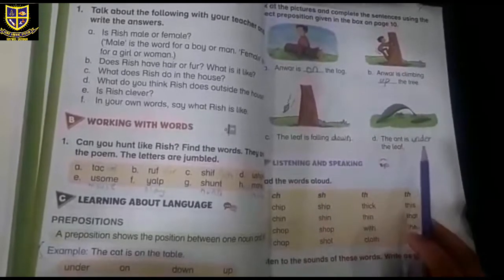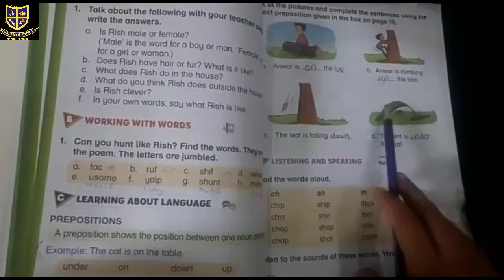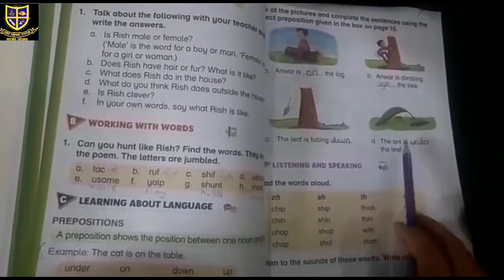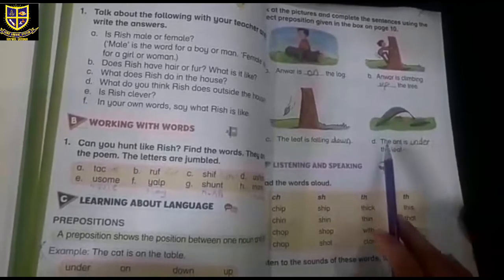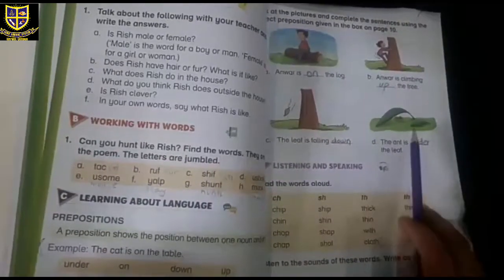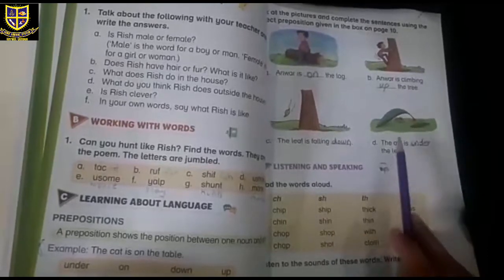D: The ant is dash the leaf. Look at the ant. Where is the ant? It's under the leaf, hiding. So, under. The ant is under the leaf.